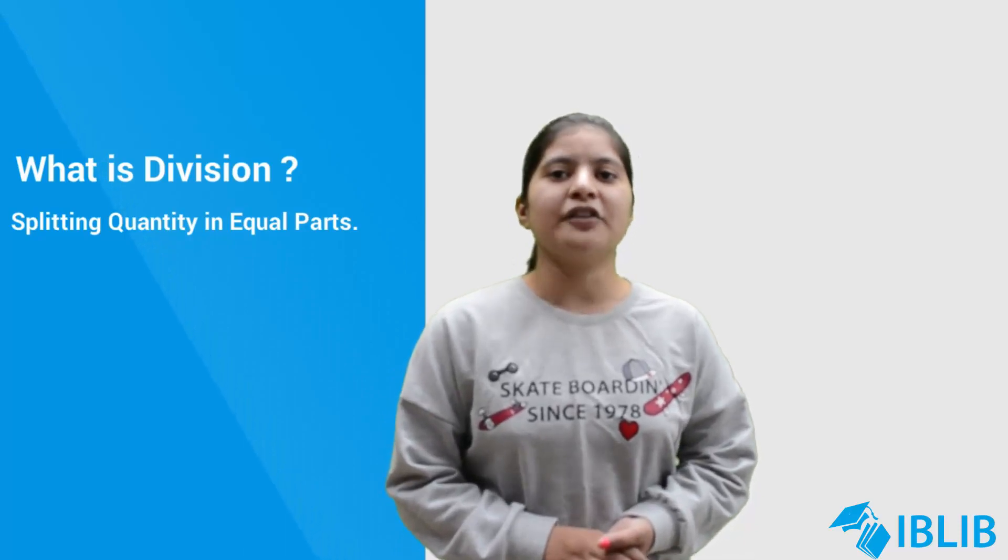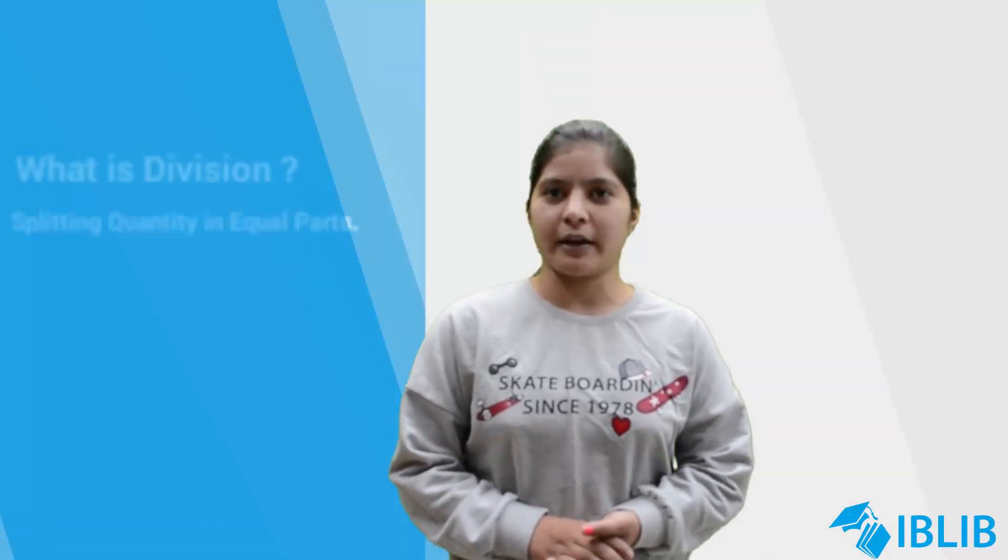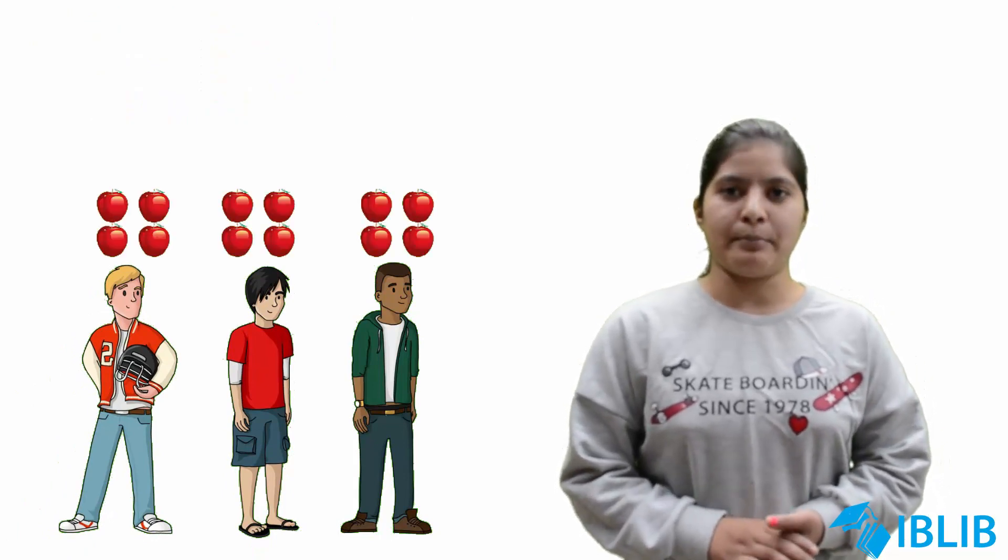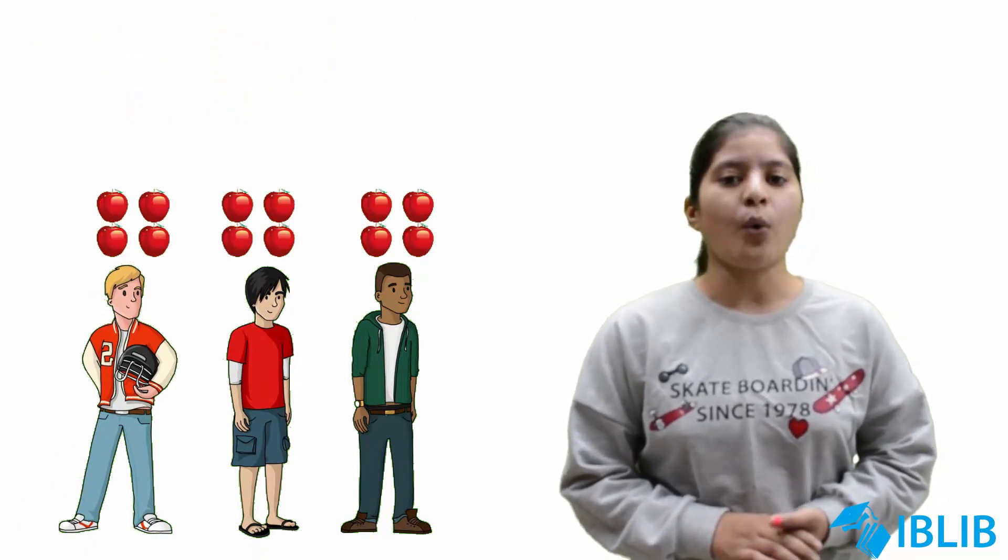Thus, we can say that division is needed for fair sharing. Suppose there are 12 apples and 3 friends want to share them. With the help of division, each friend will get 4 apples. This is how we divide.